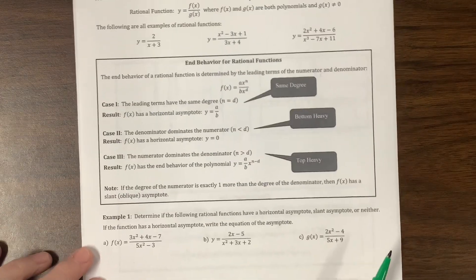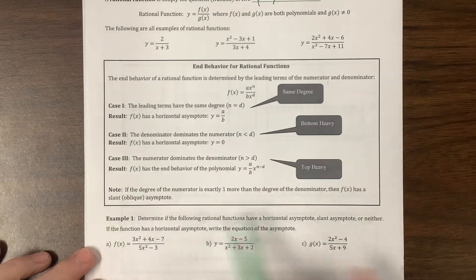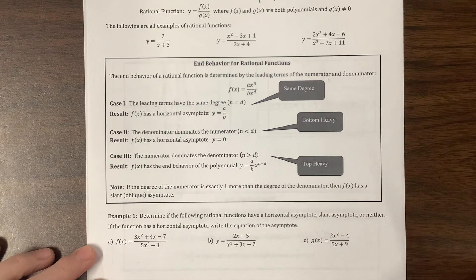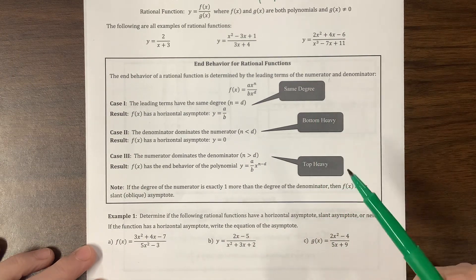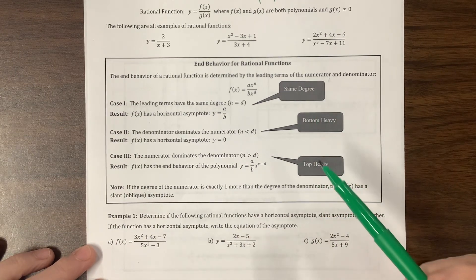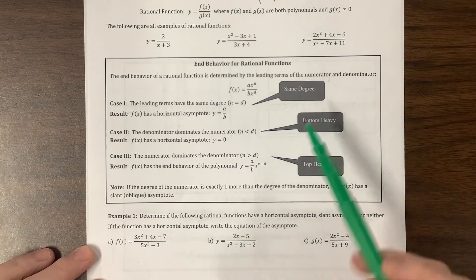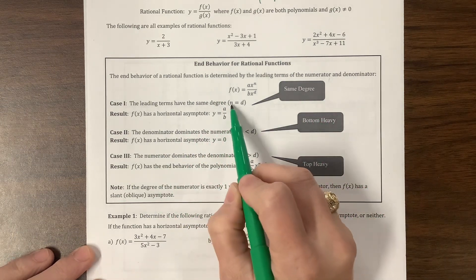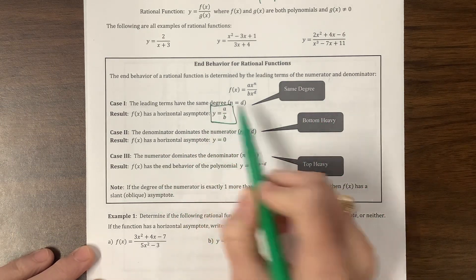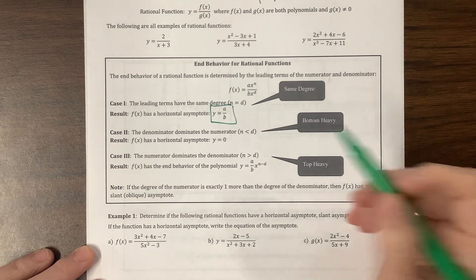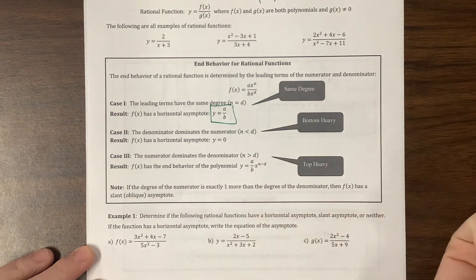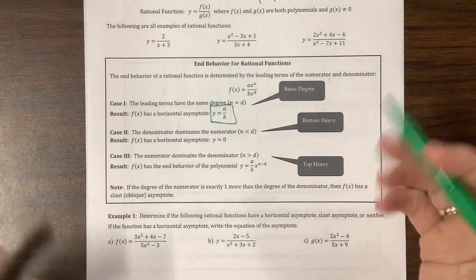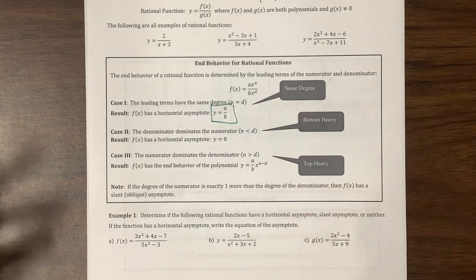I thought this was very helpful. We talk about things being top-heavy, bottom-heavy, or the same degree. When they're the same degree, we have a horizontal asymptote — we divide the leading coefficients. So if the leading coefficients are A and B, then A over B is what you get.